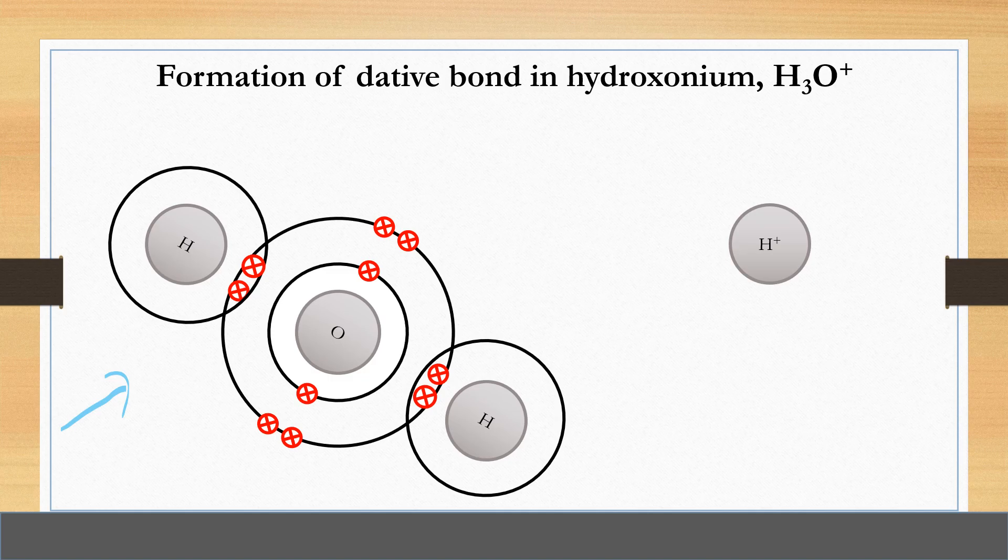And this one is hydrogen ion that does not have any electron in the shell. So the lone pair of electrons...